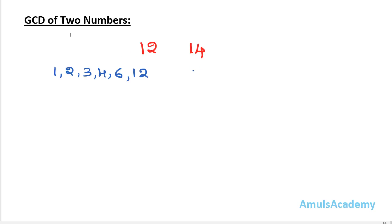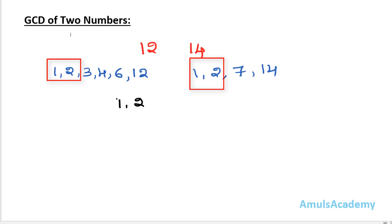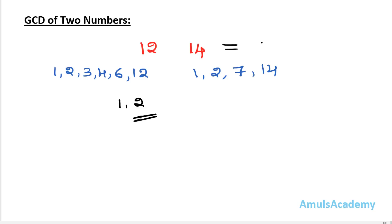Next, coming to 14, the divisors are 1, 2, 7, and 14. These are the divisors of 14. Now we need to find the common divisors — here we can see 1 and 2 are the common divisors. The greatest of these is 2, so the GCD of 12 and 14 is 2. It is the greatest number which will divide both numbers completely.